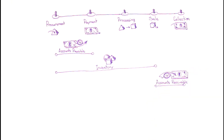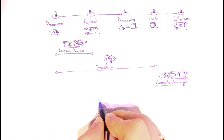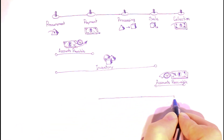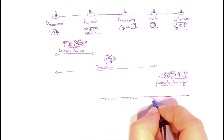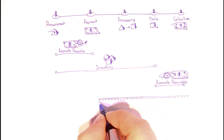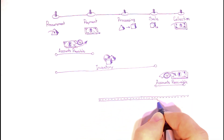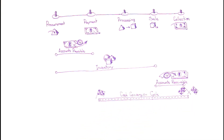We can see the operating cycle starts at the procurement stage and ends at sales, while the cash conversion cycle starts at payment and ends at collection. Both time-measured, those cycles can differ from each other.